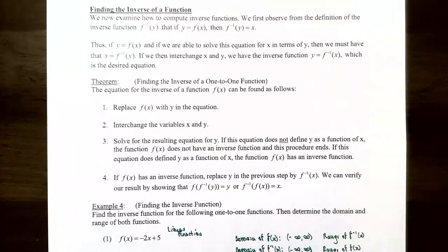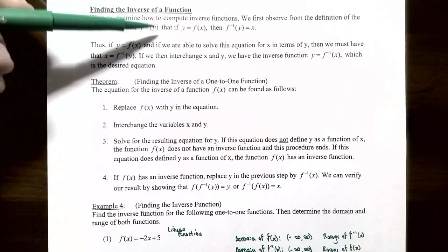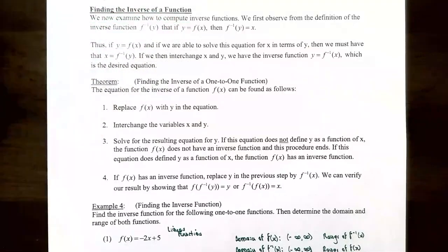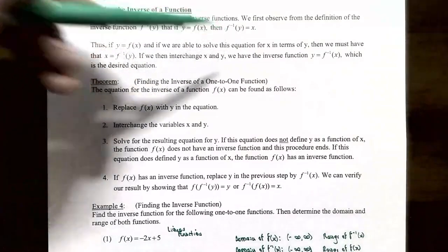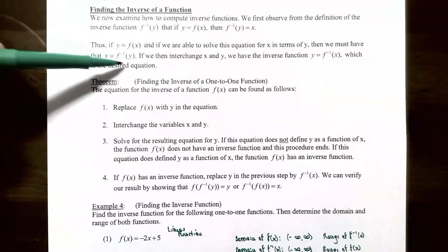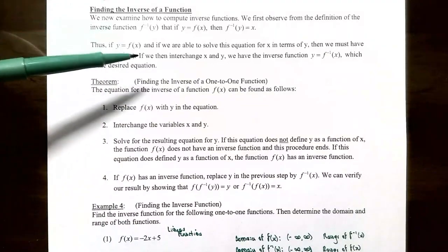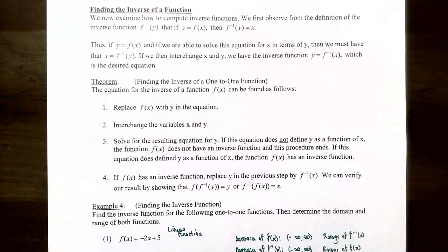Let's talk about how to find the inverse of a function — how to compute inverse functions. One-to-one functions are exactly those functions that actually have an inverse. So if we have an inverse function, the definition was: f inverse of y meant y was the output whenever you input x into f, and so the inverse function sent y back to x. If you solve this equation for x in terms of y, what's left over will be the inverse function. We interchange the variables x and y so that the inverse function is y equals f inverse of x.